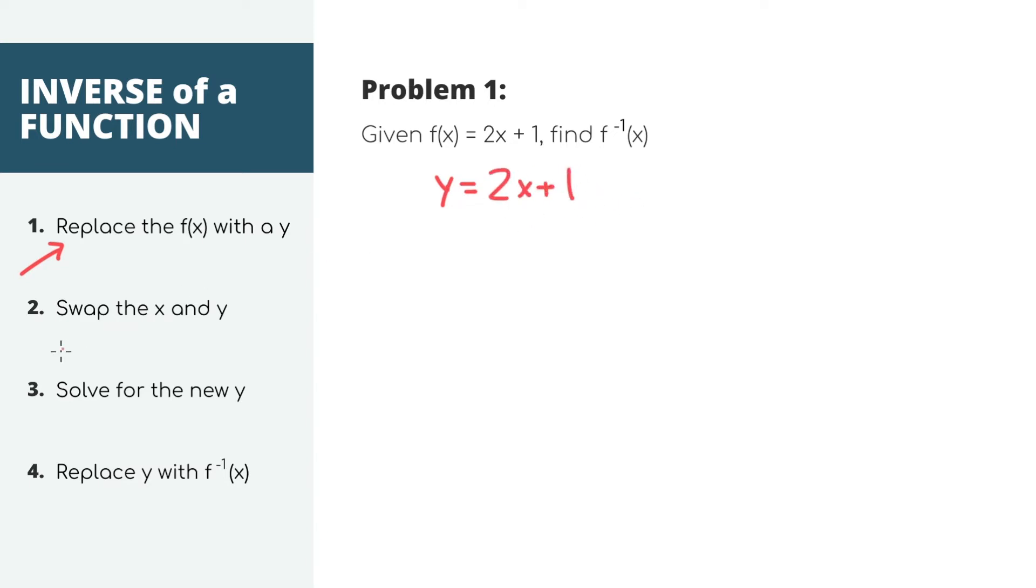For the second step, it's to actually do the inverse part and swap the x and the y. So we're going to replace this y with an x and replace this x with a y. We'll end up with x equals 2y plus 1. This next step can sometimes be the hardest or take the longest. You need to solve for the new y, which means get y alone on one side of the equation.